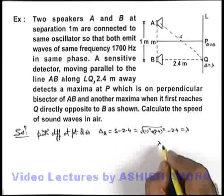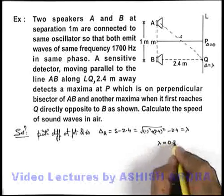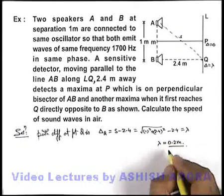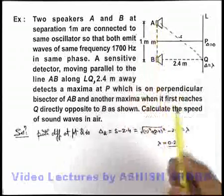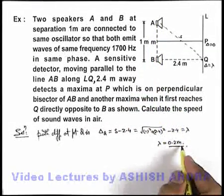When you simplify this will give you the value of lambda to be 0.2 meter. Wavelength of the wave emitted by the 2 speakers is 0.2 meter.